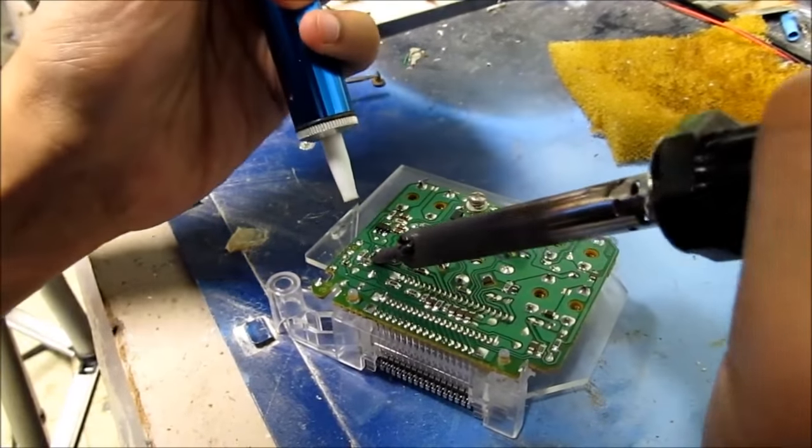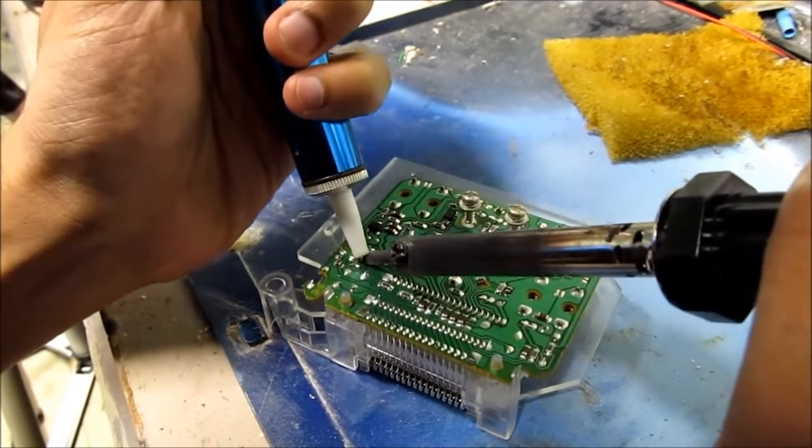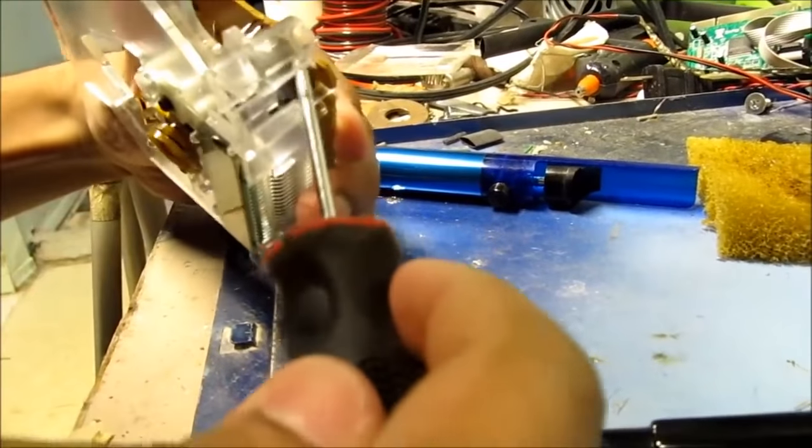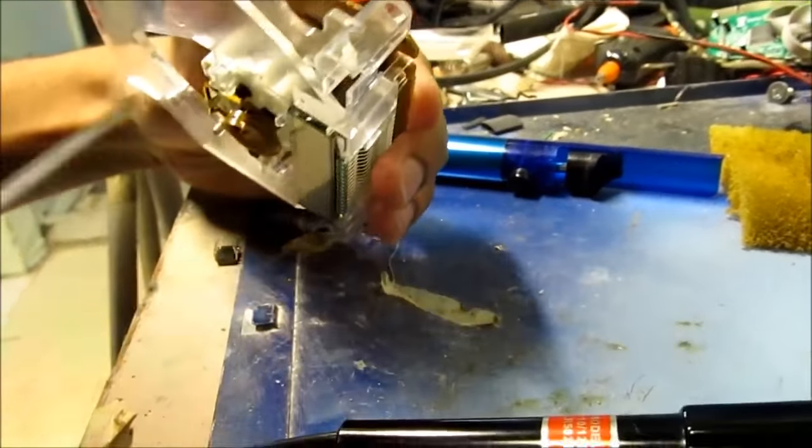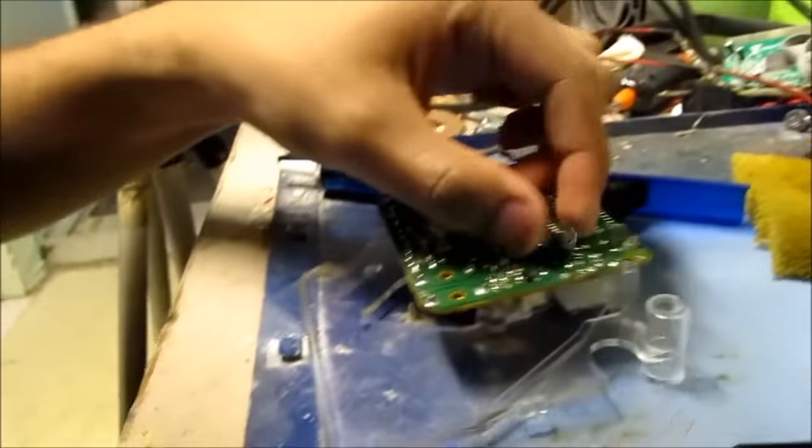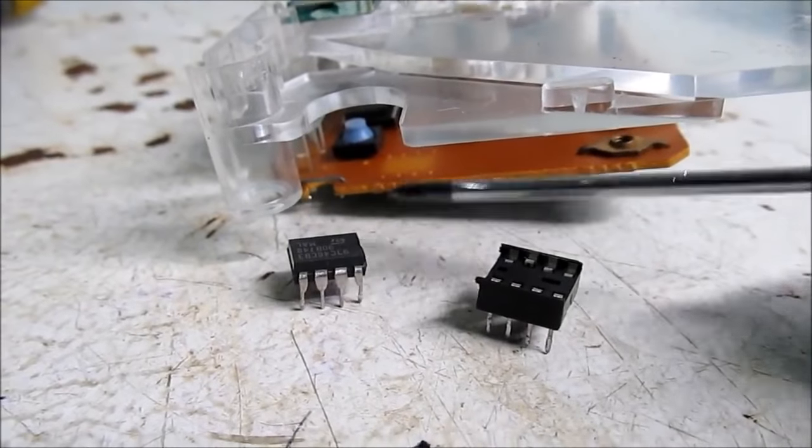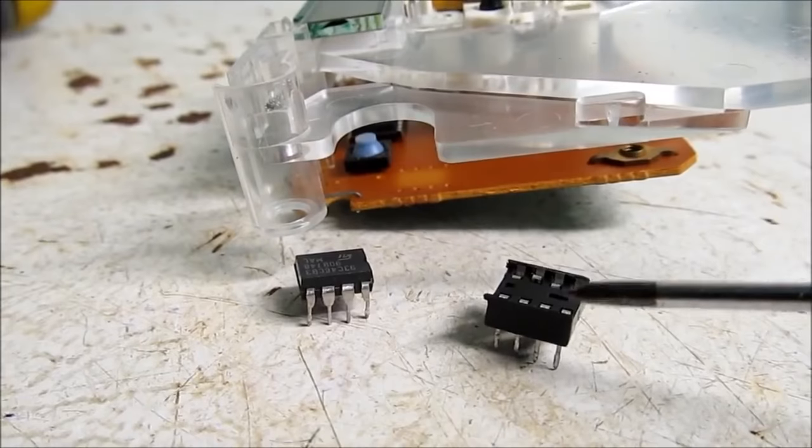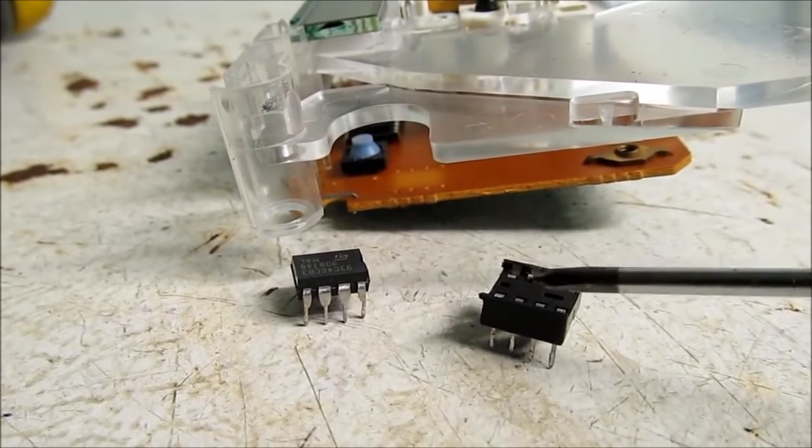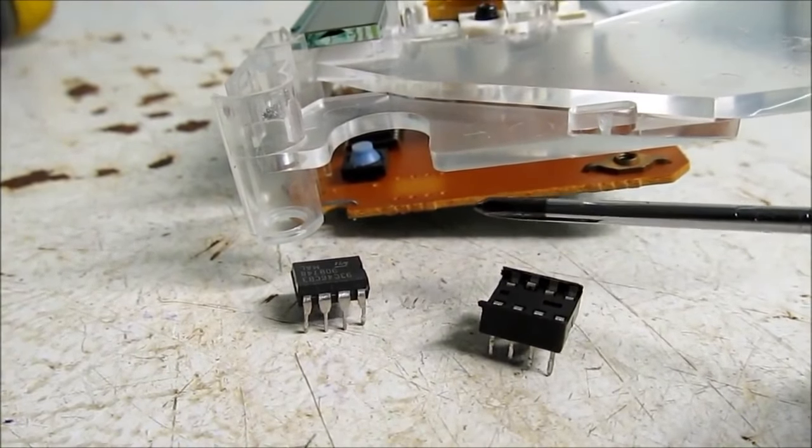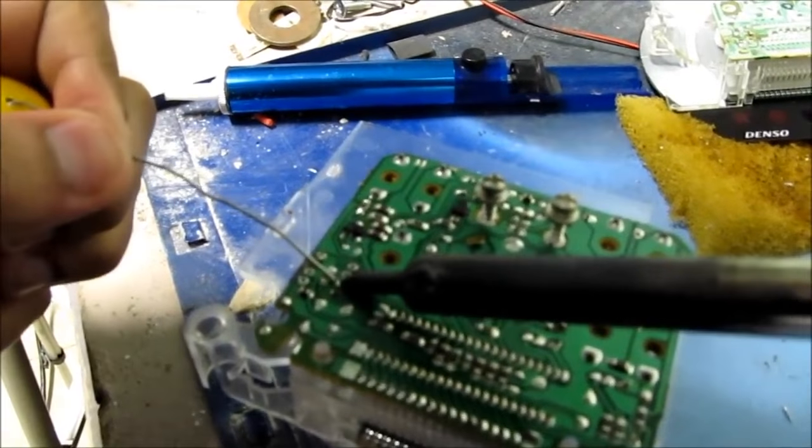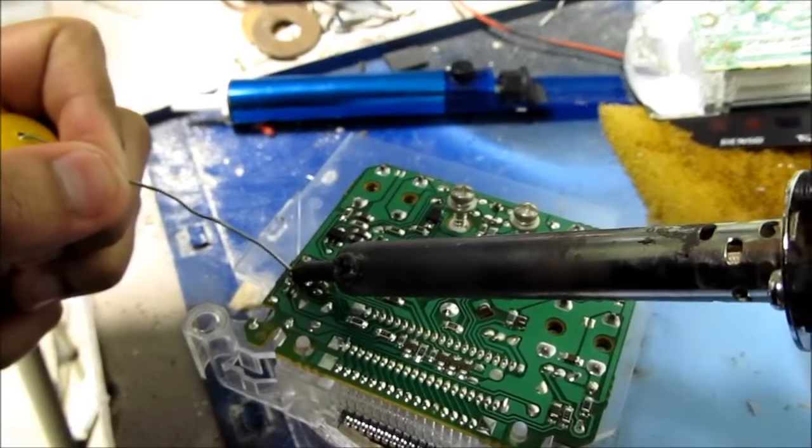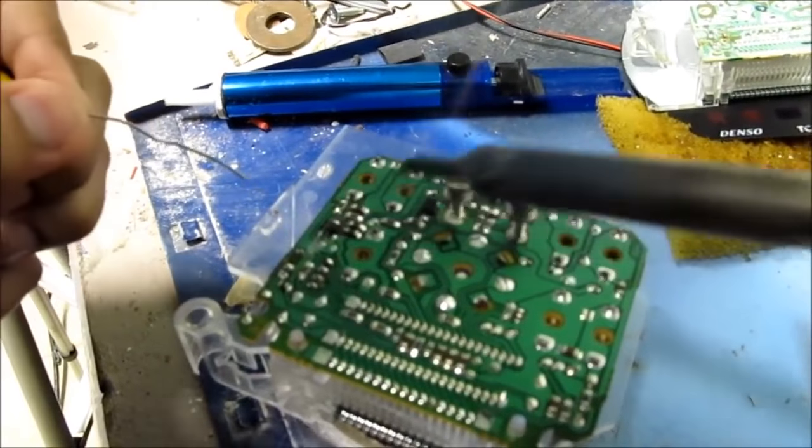Desoldering the chip from the board here. That's the chip removed from the board. Here's the odometer chip that came off the board from here. I'm going to solder in a DIP socket so that I can easily put this chip in and out when I'm testing my new program. We're re-soldering a DIP socket to the board.